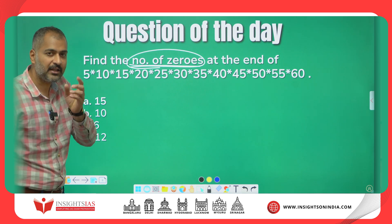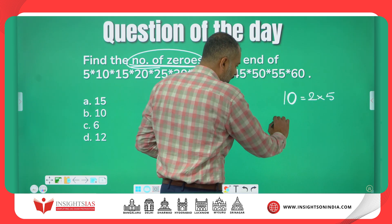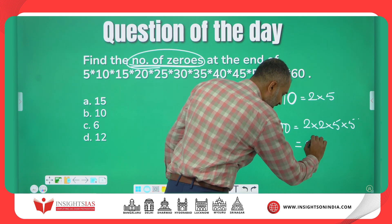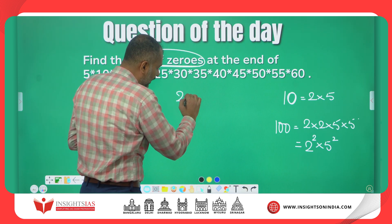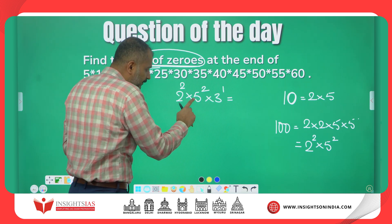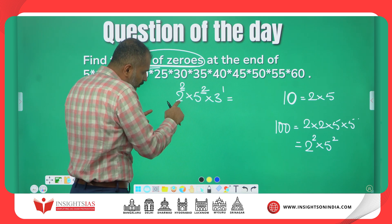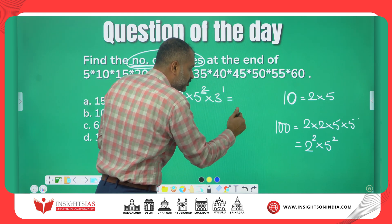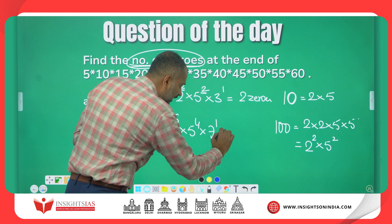The question is very simple if you understand the logic. How is a zero produced? For example, 10 is a factor of 2 and 5. Similarly, 100 is 2×2×5×5, which is 2²×5². If I give an example of 2²×5²×3¹, this also has to end with 0 because 2×5 is 10. Here we have 2 twos and 2 fives. One 2 multiplies with one 5 and produces one 0. Another 2 multiplies with another 5 and produces another 0. This expression has to end with 2 zeros.